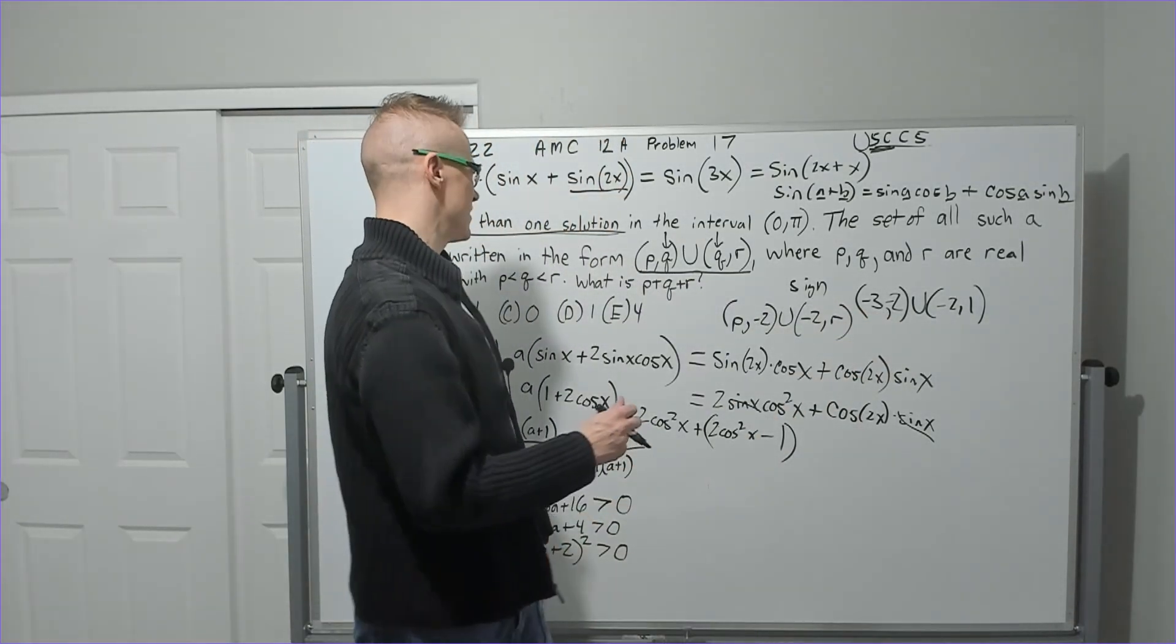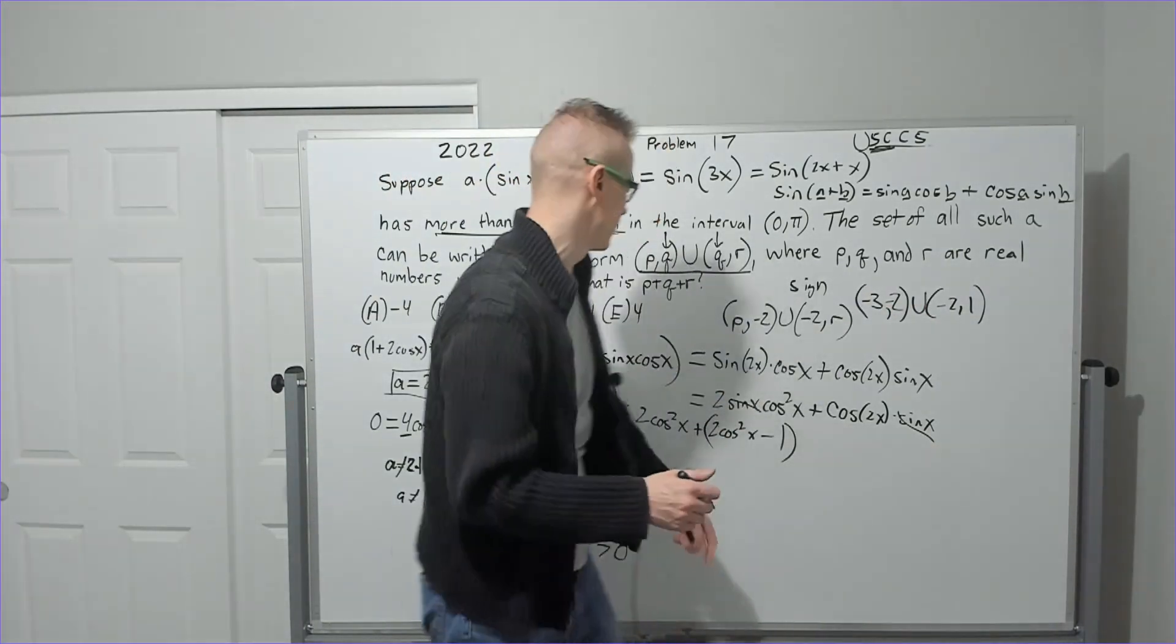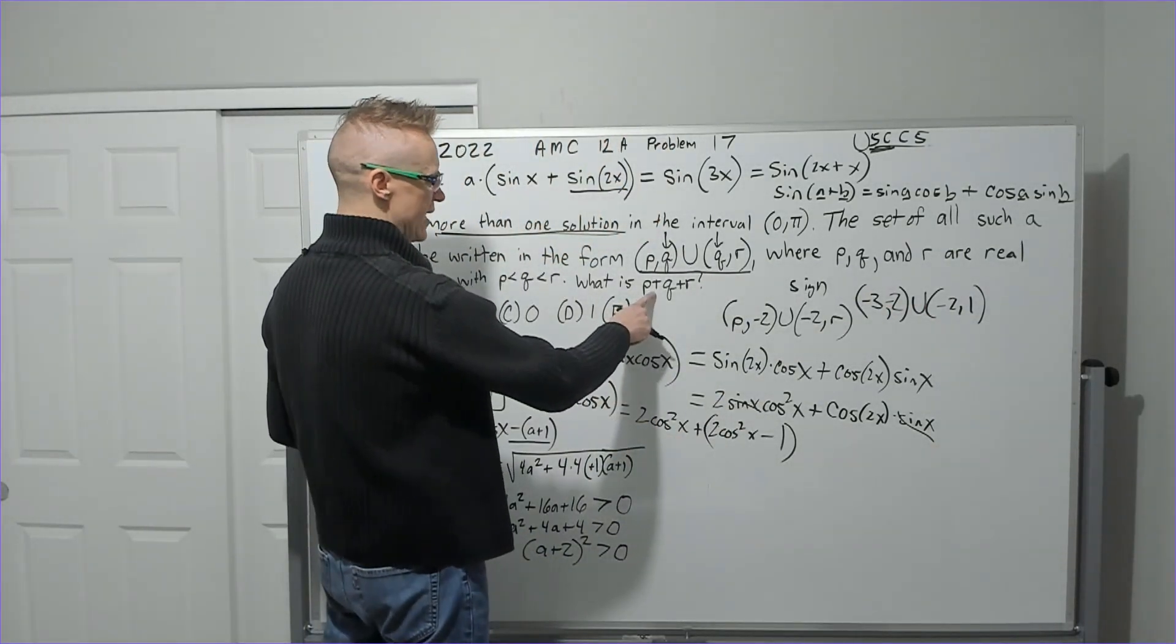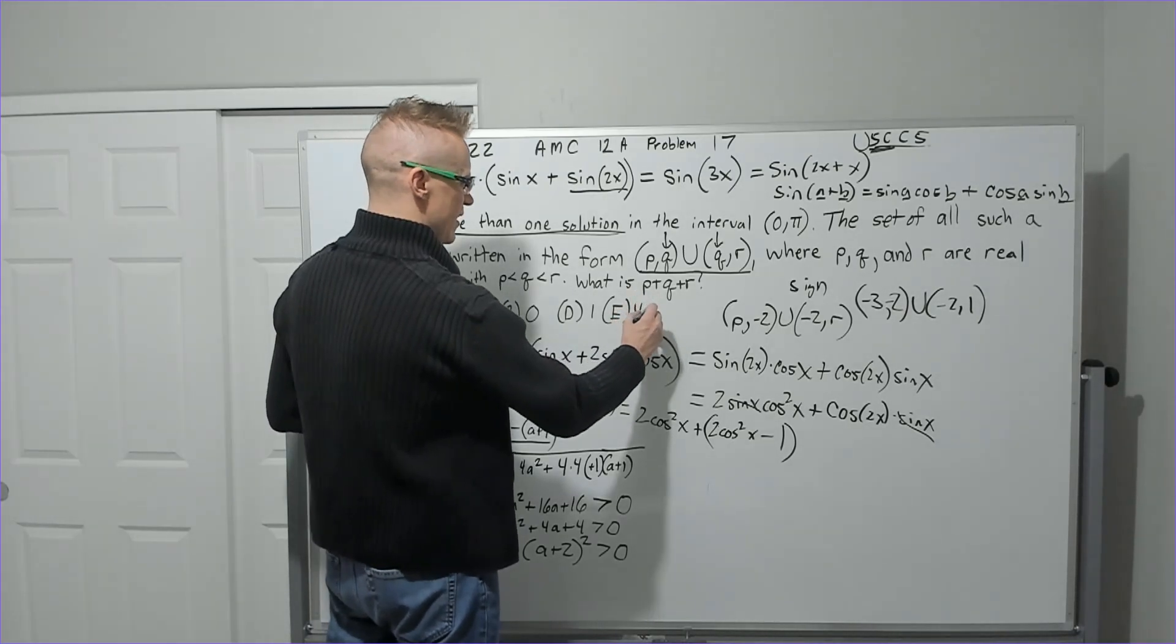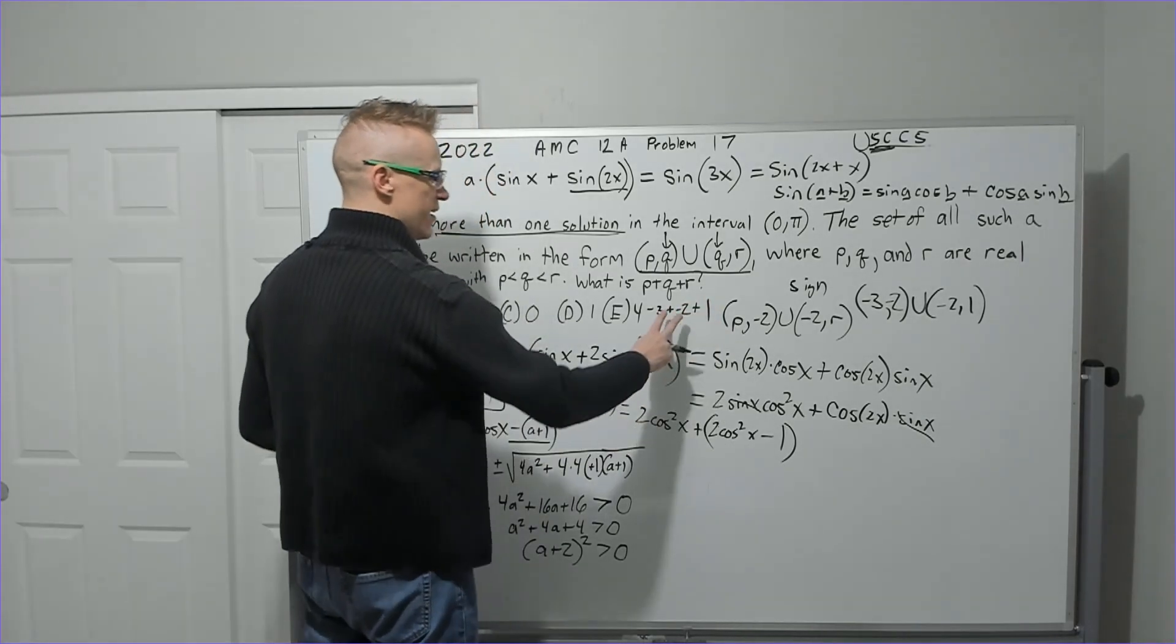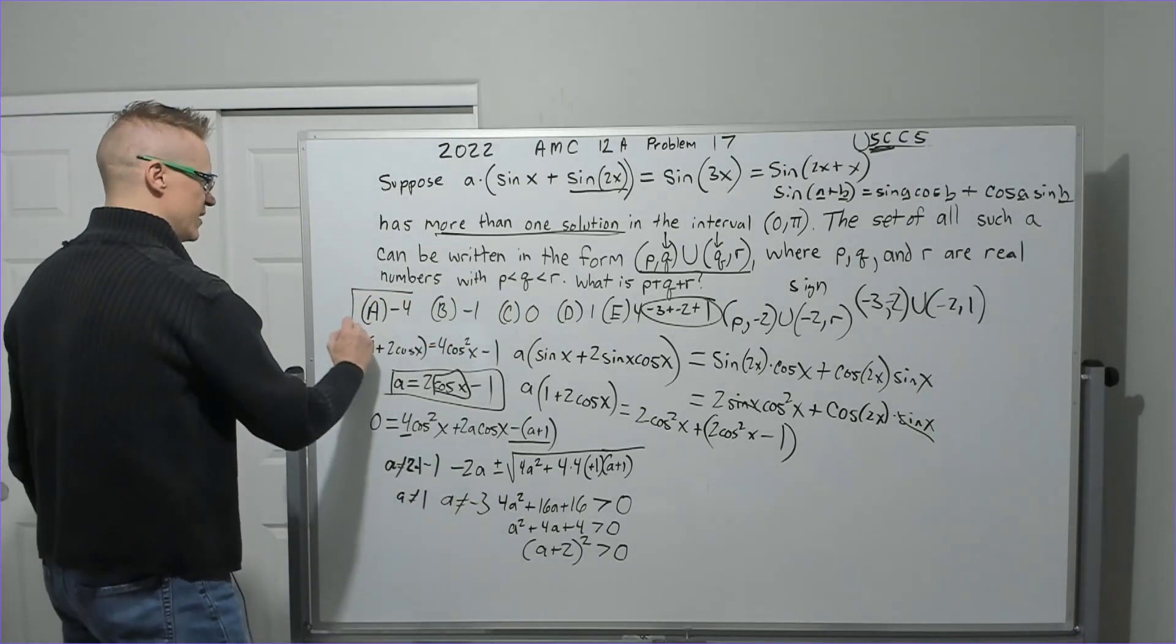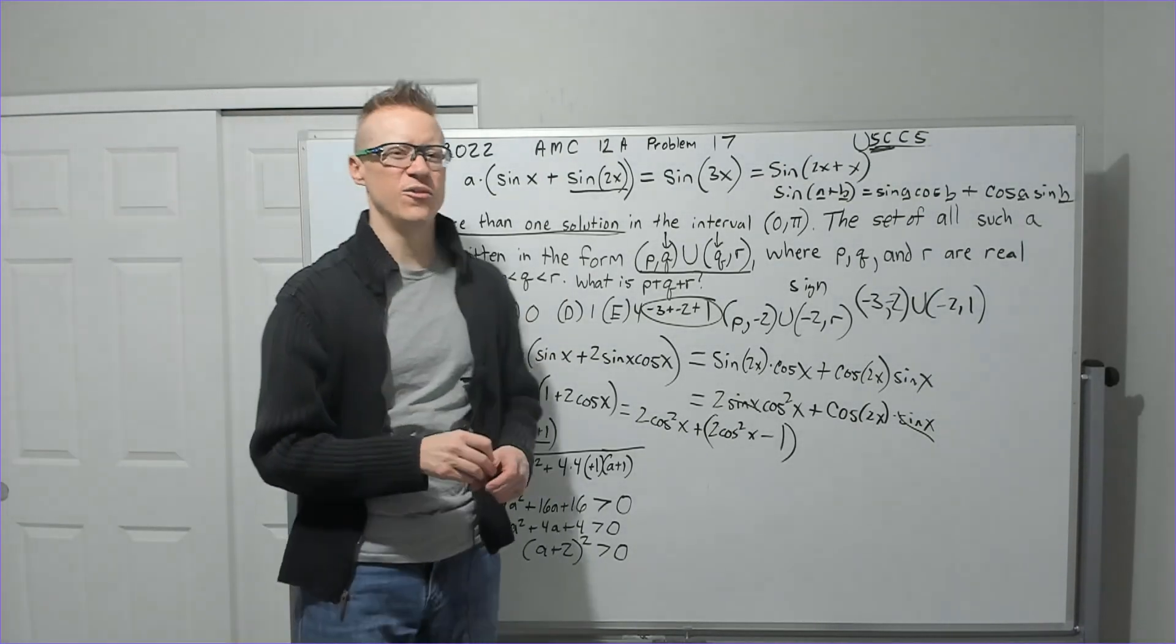You're going to get, oh, p, q, and r. I was trying to add all four and was like, I don't think we're going to get it. p is negative 3, q is negative 2, r is 1. Negative 5 plus 1 is going to give you a negative 4.